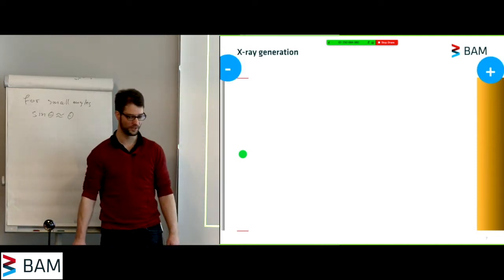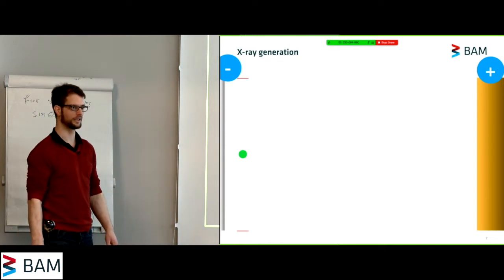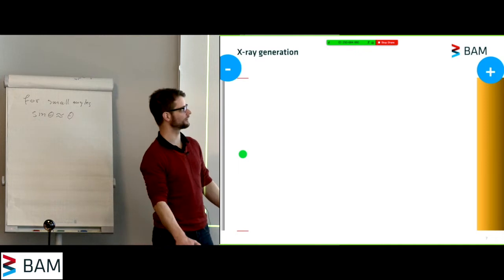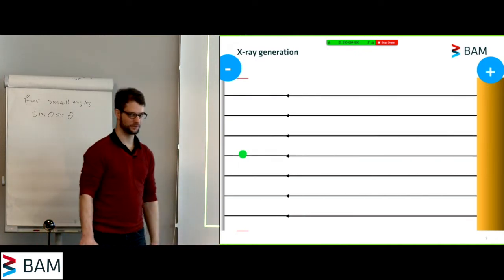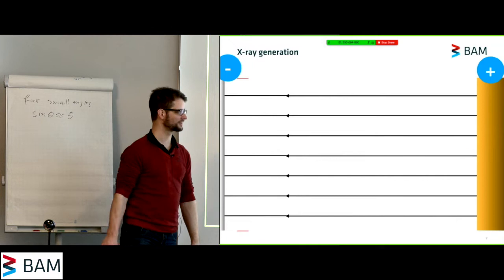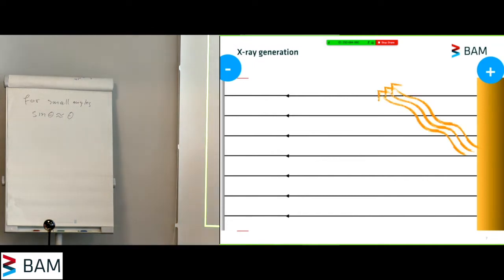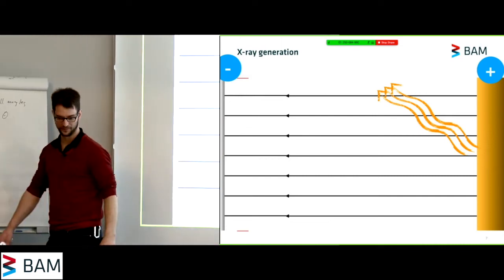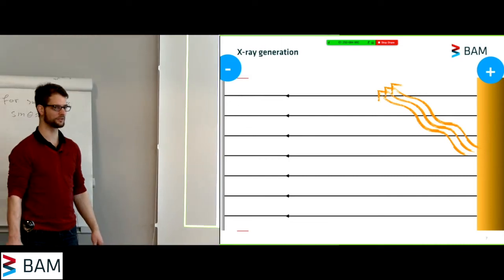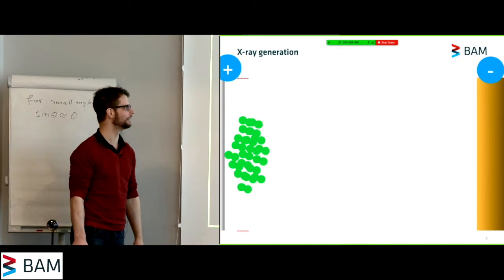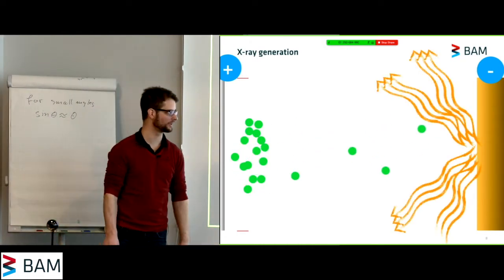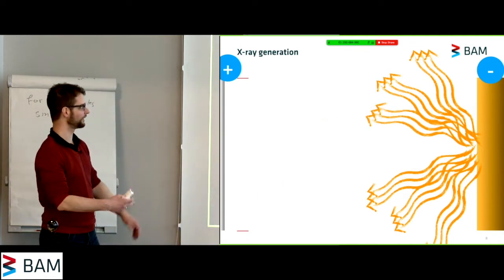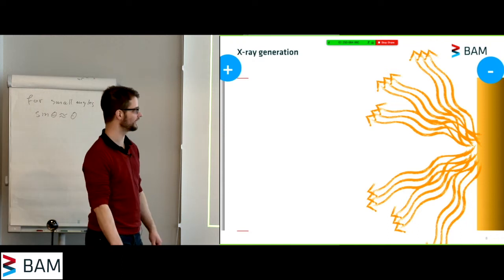So what we do is we apply an electric field between the electrons and our target. And in this electric field, our electrons will be accelerated and eventually will slam into the target and maybe emit a photon. Therefore, we try to generate a constant stream of electrons, which if you slam them into the target will generate a constant stream of x-rays.